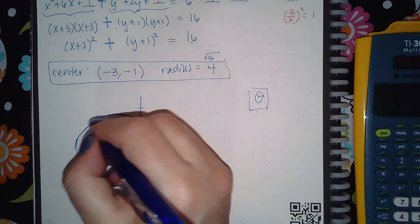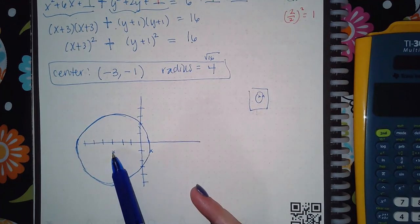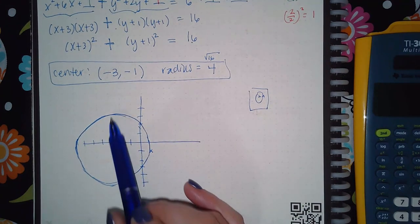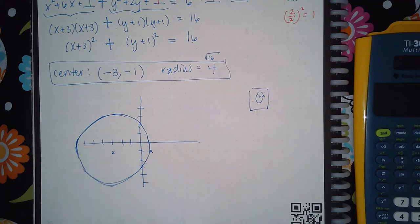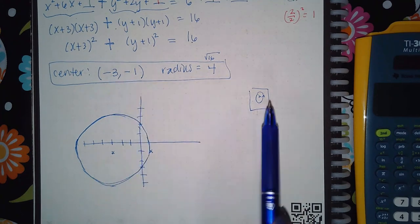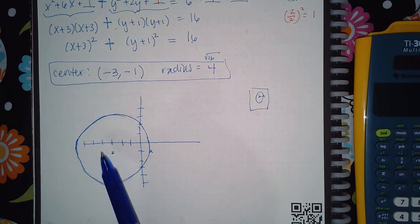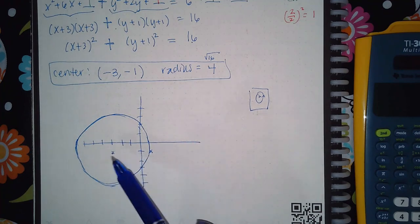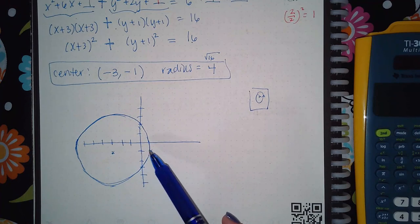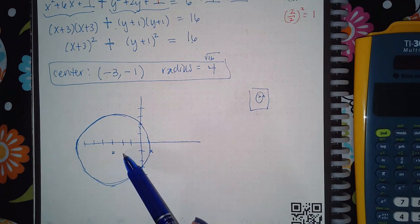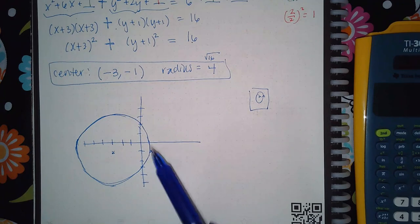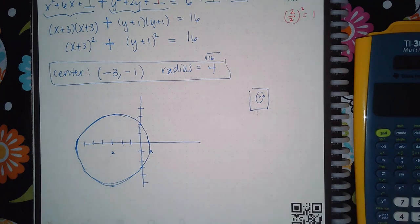The result should be a circle centered at (−3, −1) with four units out in every direction — four units up, four units down, four units to the left, four units to the right. In ALEKS, click the circle icon first, click where your center is, then drag out four units — one, two, three, four — and click. It'll draw the circle for you.